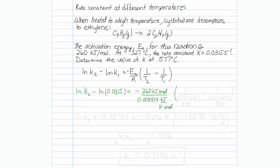Now that should imply something to you about your temperature — temperature should also be in kelvin. So T2 is going to be 577 plus 273, and T1 is going to be 527 plus 273, so we are in units of kelvin.